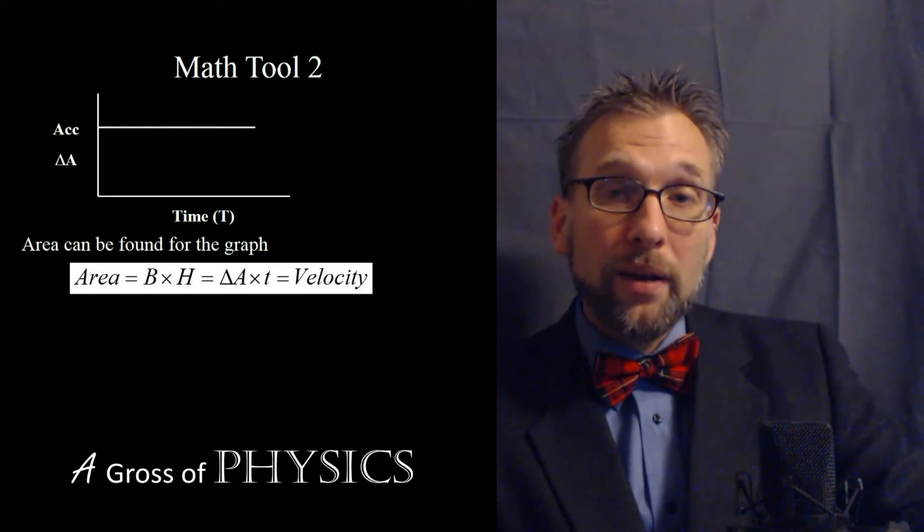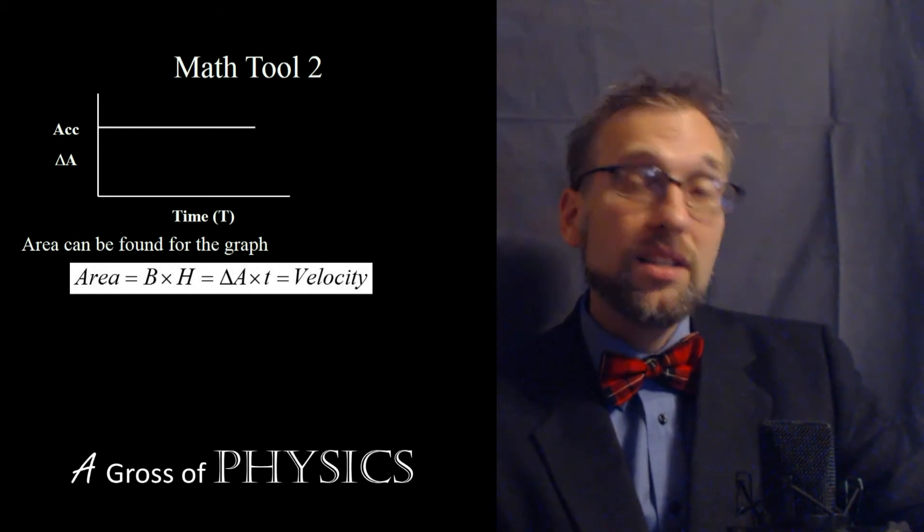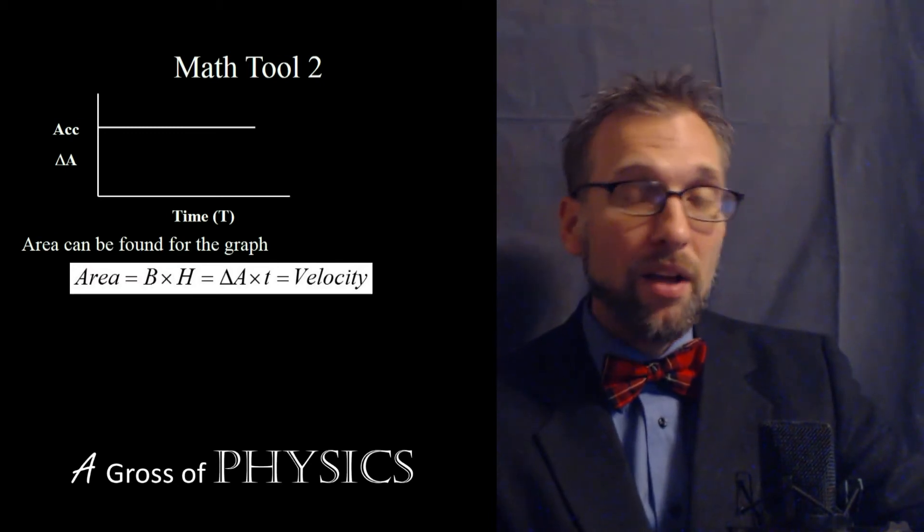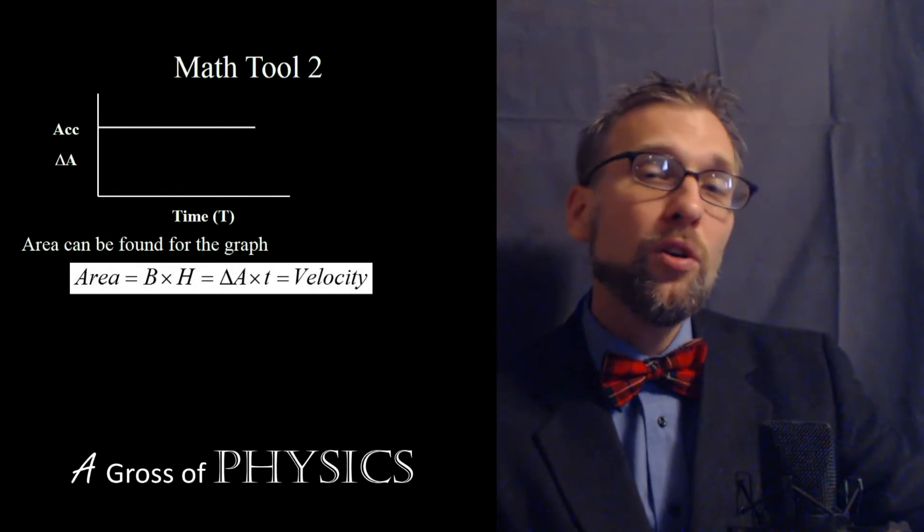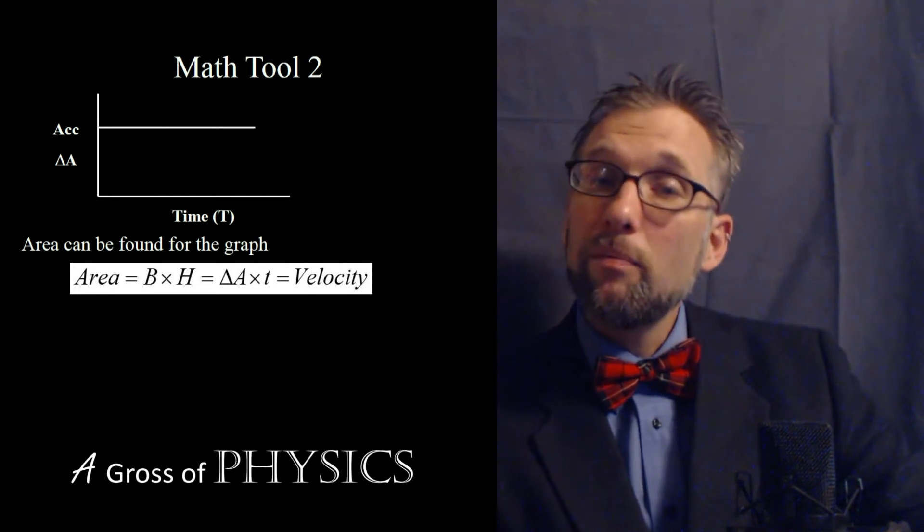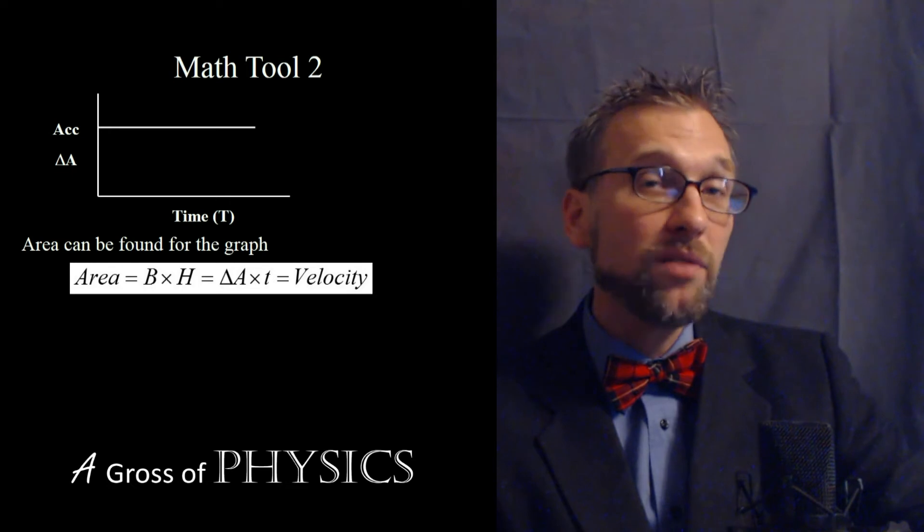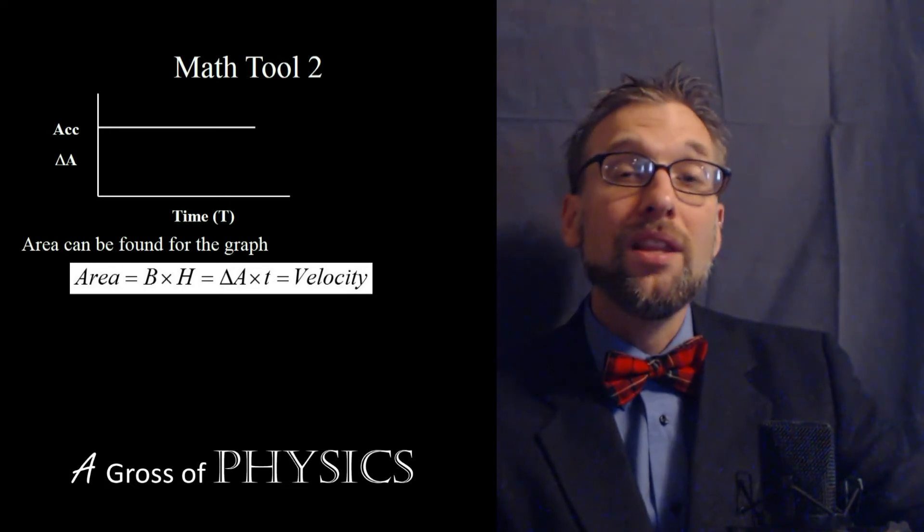Now at this point the acceleration versus time graph is really simple. We're going to do uniform accelerations most of the time. They're going to be flat lines and all we can do is find the area. So you'll be dealing with displacement versus time and velocity versus time most often. But make sure you don't neglect the fact that acceleration versus time graphs can be useful. And in order to do that you can use the area.